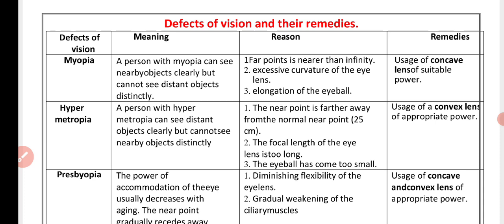Second defect of vision: hypermetropia. A person with hypermetropia can see distant objects clearly but cannot see nearby objects distinctly. Reason: the near point is further away from the normal near point (25 cm). The focal length of eye lens is too long.